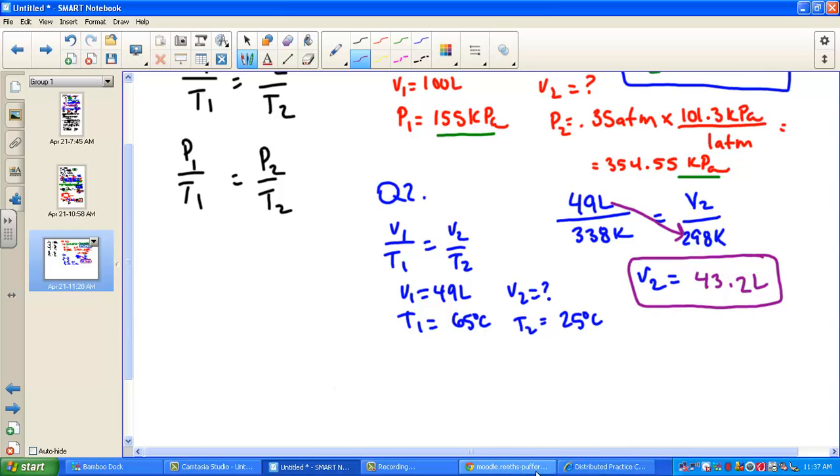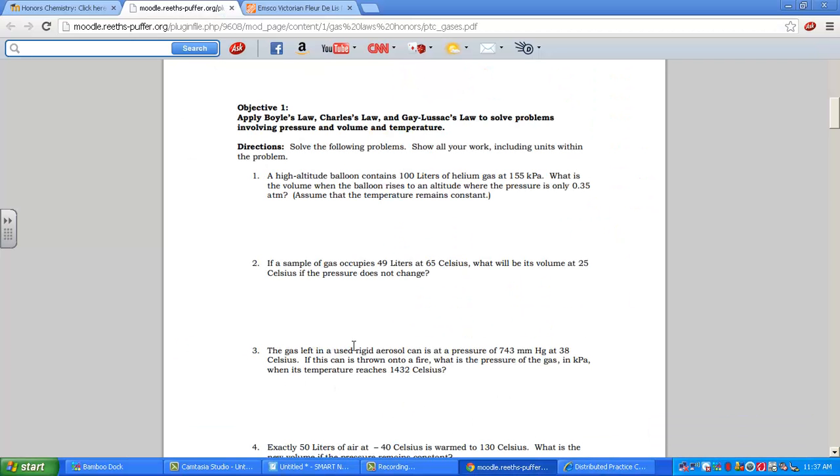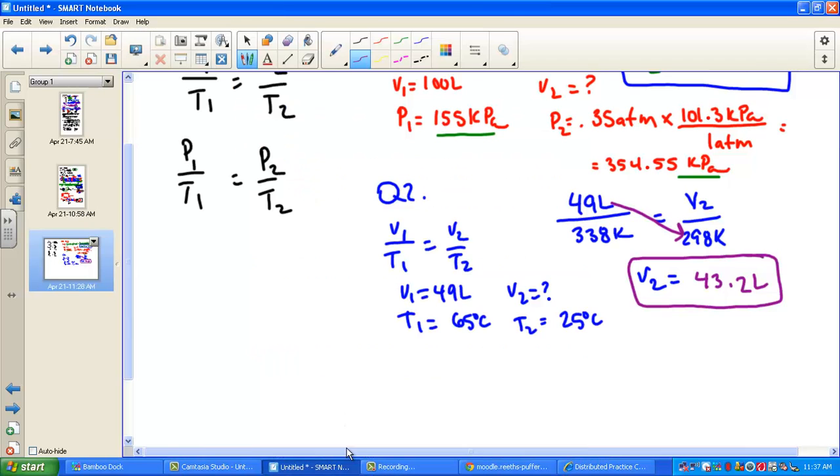Reading for number 3. A gas left in a used rigid aerosol. That's just telling us it's a rigid volume, a fixed volume. We have a pressure, 743 millimeter mercury at 38 Celsius. So a P1T1. We throw that can into a fire, so obviously the pressure is going to rise. The fire is so warm it's at 1432 Celsius. Let's find the new pressure.